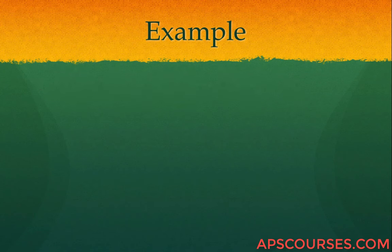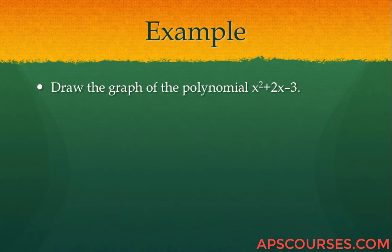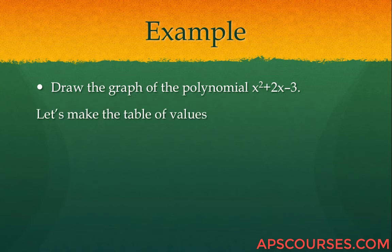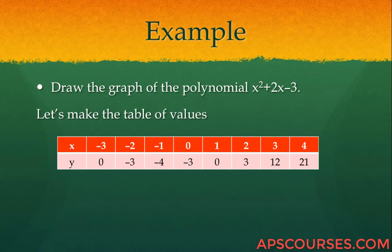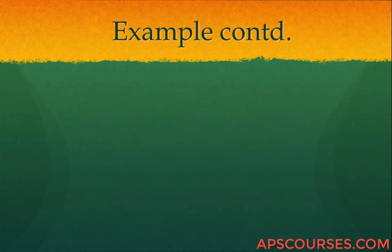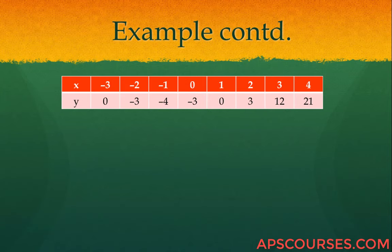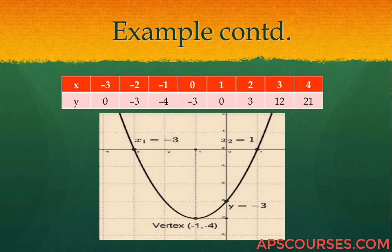The next example: draw the graph of the polynomial x squared plus 2x minus 3. Again, make a table of values for x and y. Take values x equals minus 3, minus 2, minus 1, 0, 1, 2, 3, 4, and you get the values of y accordingly. Plot all these points on your coordinate plane and this is your graph. At x equals minus 3 and x equals 1, the value of the polynomial is equal to 0.